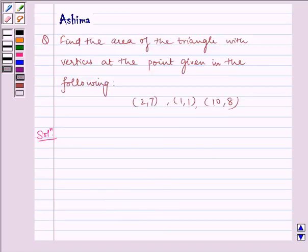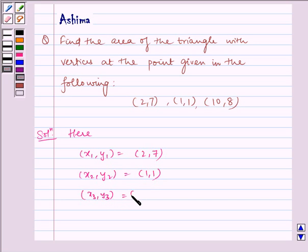Now let us write the solution. Here (x1,y1) = (2,7), (x2,y2) = (1,1), and (x3,y3) = (10,8).